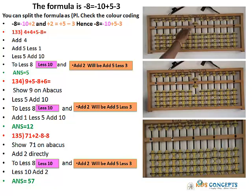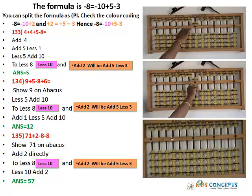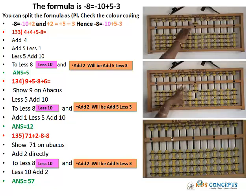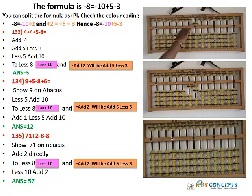Now you have to add 6 to it. Can you add 6 directly? You cannot add 6 directly, so you have to use the formula. What is the formula? Add 1, Less 5, Add 10. The answer is 12.